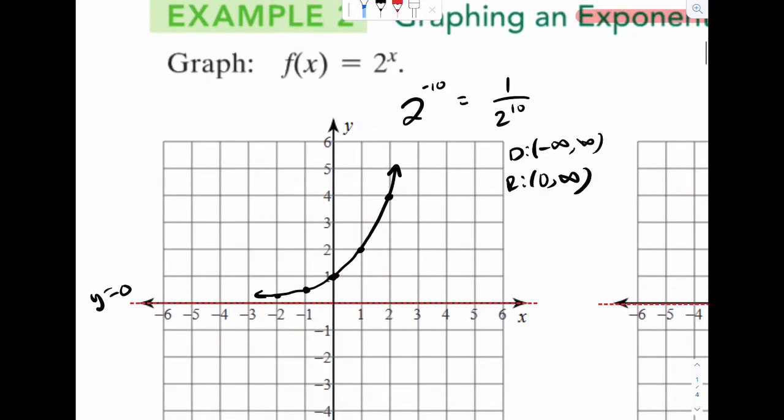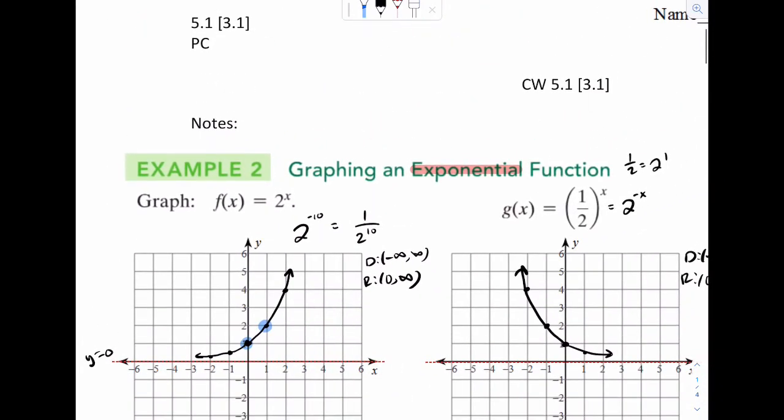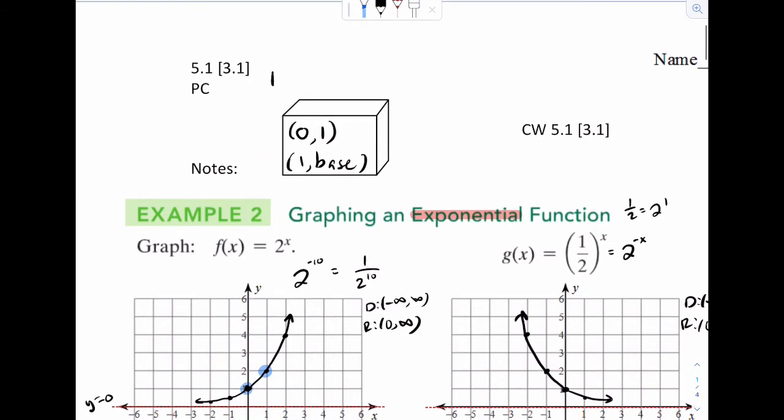The two points you really want to highlight are going to be this point and this point. I call those the parent points and those are going to be 0, 1 and 1, base. Those will be your standard points you want to use. So take some time just to write those down. That's parent points for exponential function.